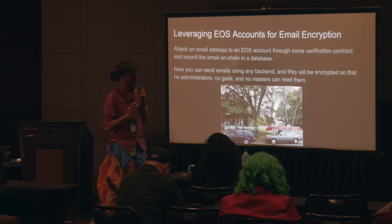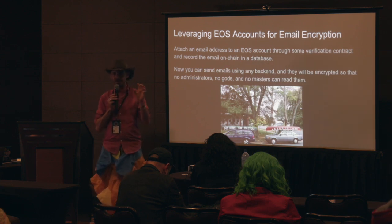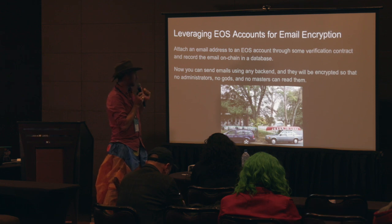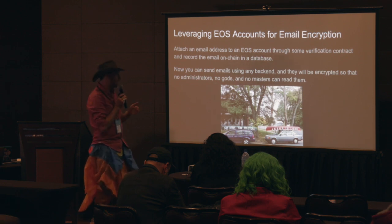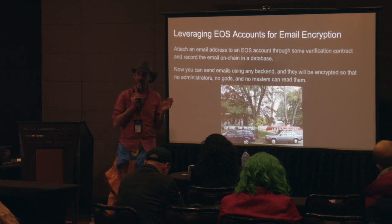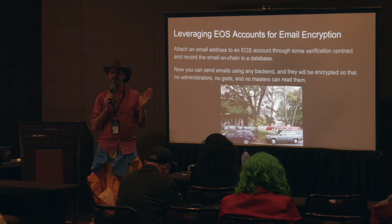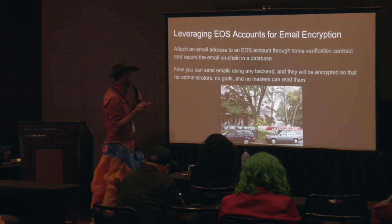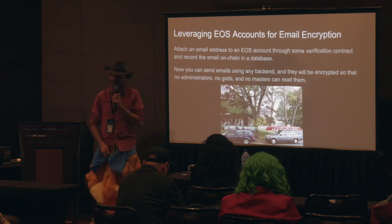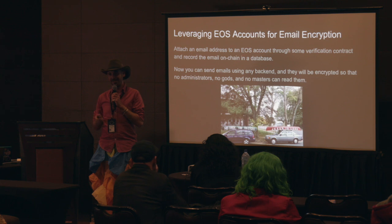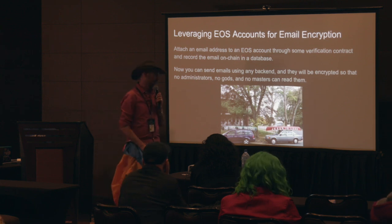There's a really good opportunity to leverage EOS accounts for email encryption because they're super simple and we can have an online public database of keys. We can attach an email address to an EOS account through a verification contract, record the email accounts attached to that EOS account on-chain, and then send and receive emails using any backend. You can use Gmail or whatever you normally use with a small plugin that references your keys and does a PGP-like encryption, but super simple. The blockchain database provides an untamperable record of keys, so there's no web of trust required. This would also allow HIPAA-compliant emails on any platform because they've been encrypted at rest and in transit.